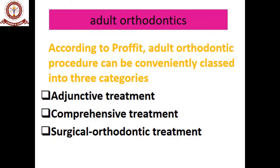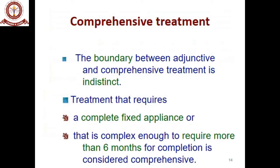According to Proffit, adult orthodontic procedures can be conveniently classified into three categories: adjunctive treatment, comprehensive treatment, and surgical orthodontic treatment. Comprehensive treatment involves a complete fixed appliance, or cases referred from other specialties such as prosthodontics, endodontics, or periodontics that take more than six months to complete. The boundary between adjunctive and comprehensive treatment is not very distinct.